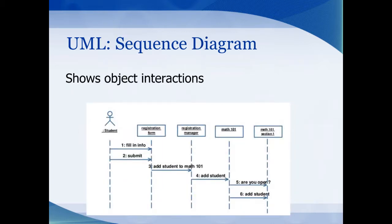A sequence diagram shows how one class communicates to other classes by sending messages back and forth. So a student would submit registration information. The registration would add the student to the class. The math class would either accept or reject the student depending on their criteria and so on.